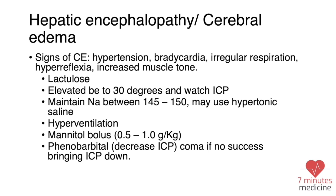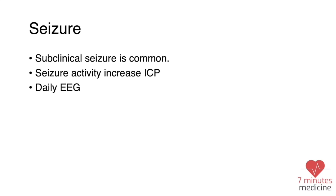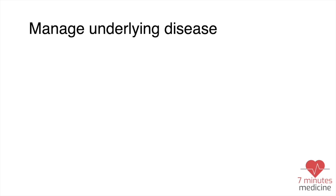You might need to give lactulose via NG tube if the patient cannot eat or drink due to altered consciousness, or via enema. Elevate the head of the bed, maintain sodium at 145 to 150, and you might need hypertonic saline, hyperventilation, mannitol, and phenobarbital — these are measures to decrease intracranial pressure, which will result in better brain perfusion. Subclinical seizures are common, so some experts recommend continuous EEG monitoring.